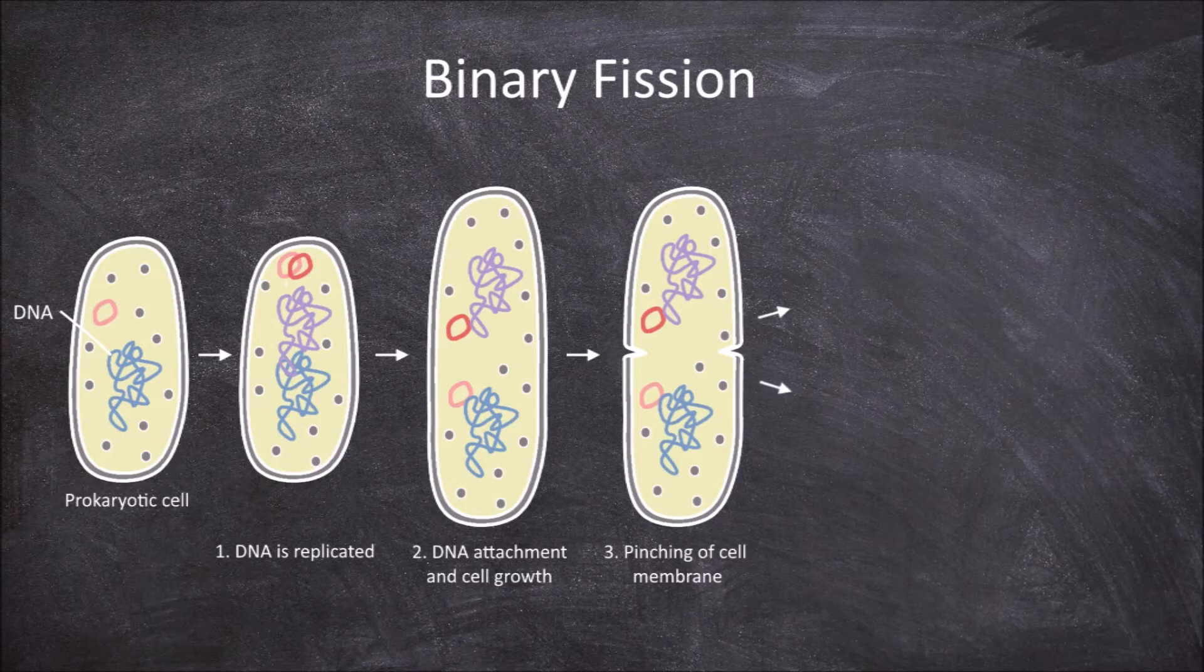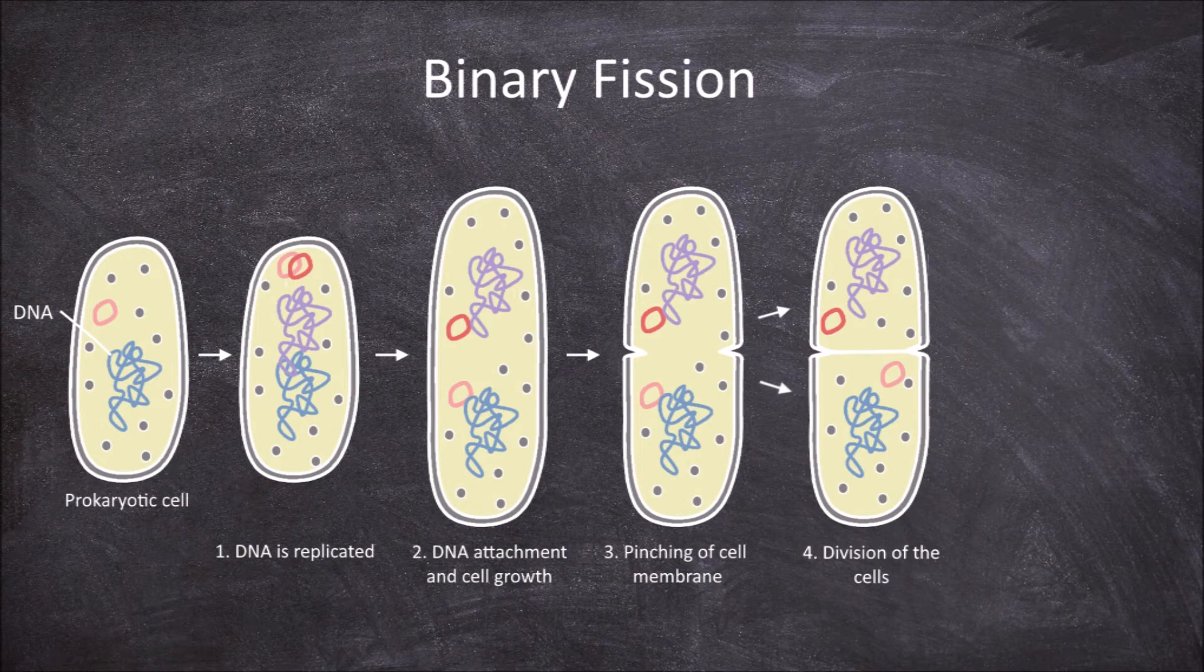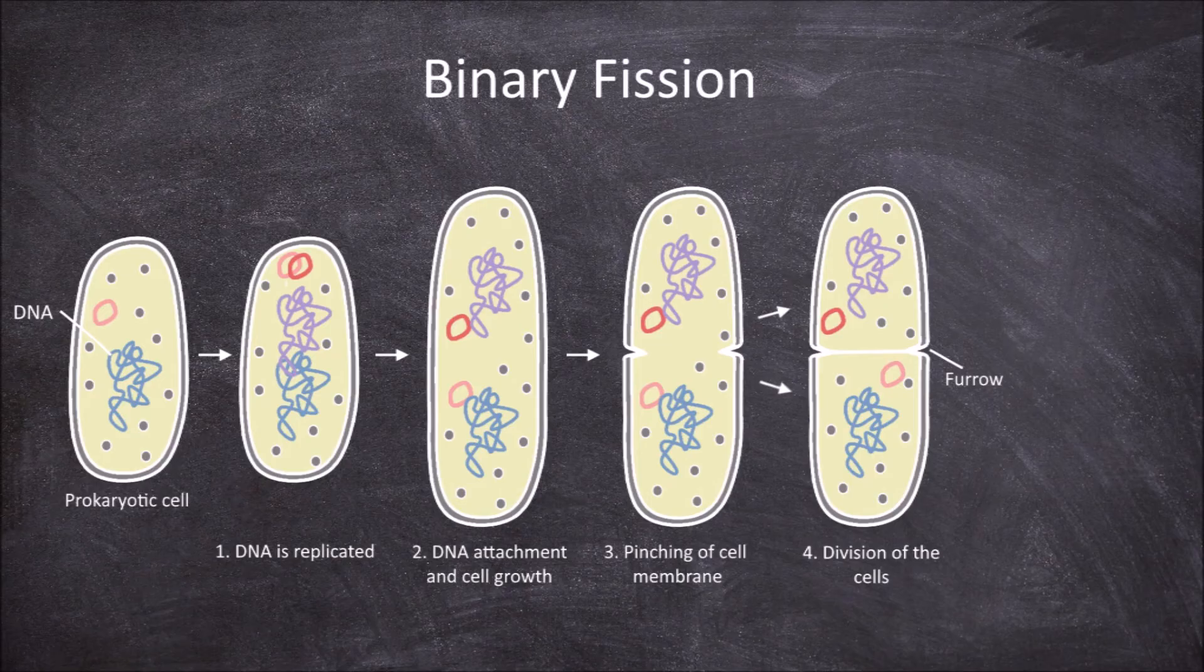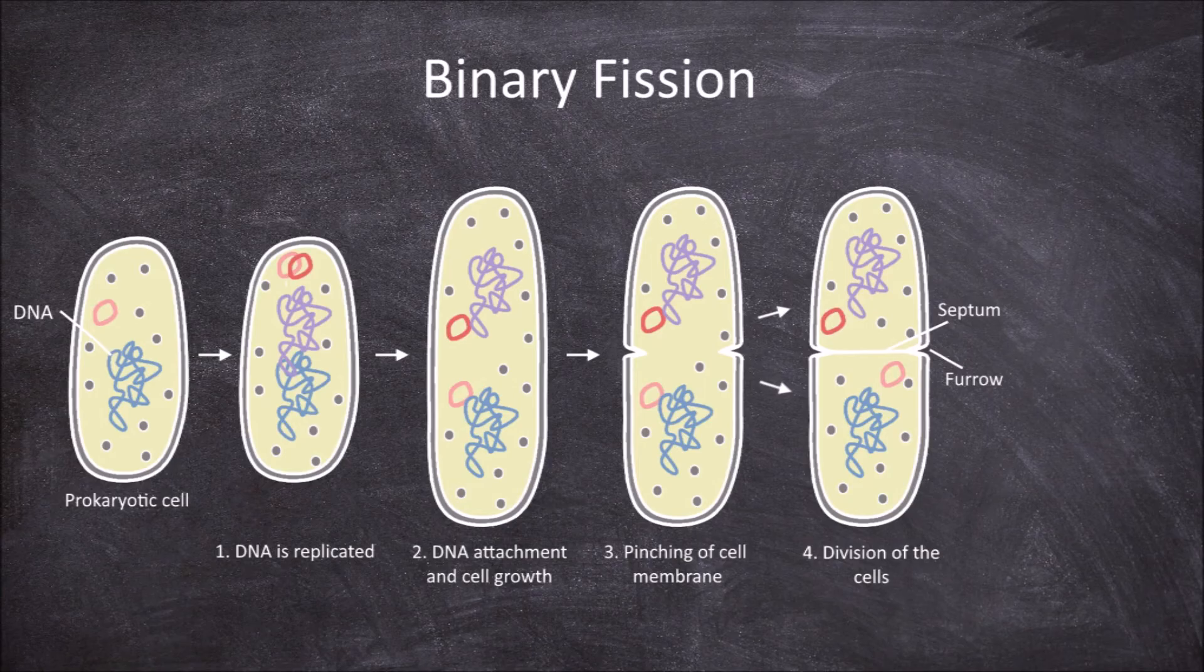The fourth step involves the actual division of the cell membrane and wall. As the furrows continue to grow and a septum forms, the two furrows end up meeting and causing the complete division into two cells.